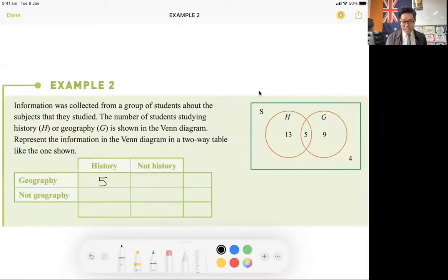Now, the other one that's actually really easy to deal with as well is how many people do not study history or geography? We can see here that there's four people outside history and geography that don't study either. So if someone doesn't study geography or doesn't study history, that would actually go right here. Does that make sense? Hopefully it does.